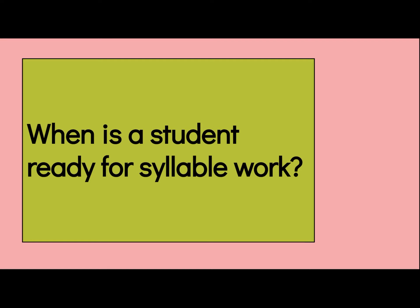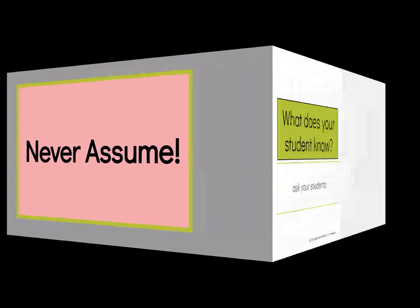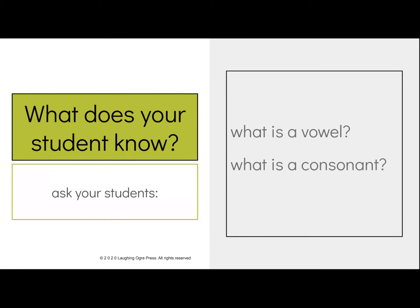I teach my students syllable work when they encounter multi-syllabic words in contextual reading and they are unable to read them. Always get to know your student first. We're going to ask your student: what is a vowel? What is a consonant? This is so important — they need to understand the difference. We're also going to talk about Y as a vowel and W as a vowel when it appears in vowel pairs.